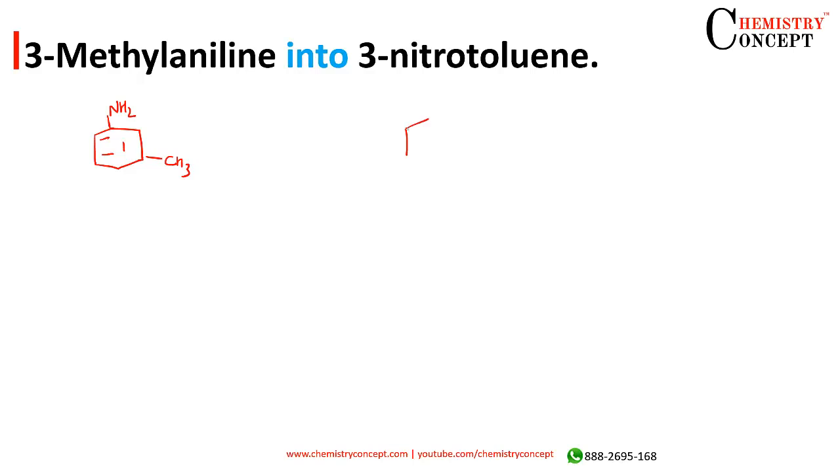3-methyl aniline into 3-nitrotoluene. Toluene is technically nothing but methyl benzene, and then the nitro group is there.